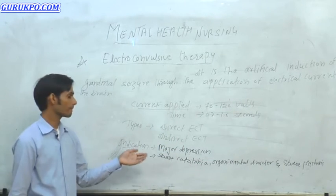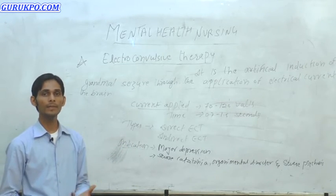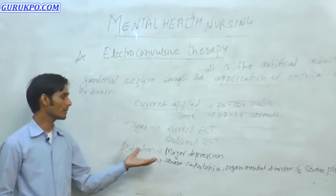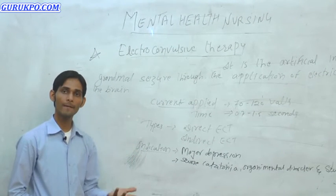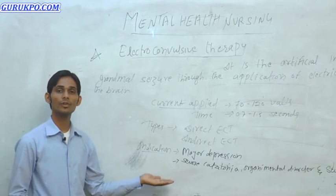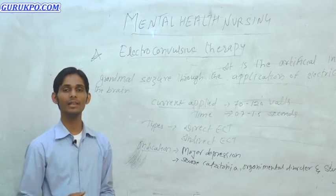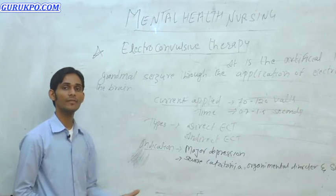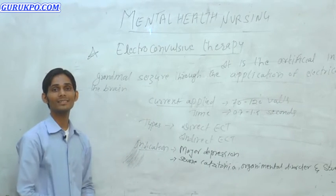Next we will see the side effects of ECT. Side effects may include drowsiness, restlessness, and memory impairment — the person might forget things suddenly after ECT. There may also be dryness of mouth and tongue bite, as passing the electrical current can cause the person to suddenly bite their tongue. These are the side effects which can occur during ECT.